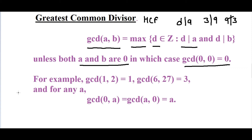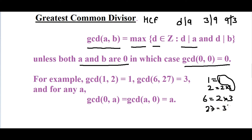Mathematics is based on axioms — if you change the axioms, mathematics changes entirely. For example, gcd(1, 2) = 1: 1 divides 1, and 1 divides 2, so 1 is the biggest common factor. For gcd(6, 27): 6 = 2 × 3, and 27 = 3³, so GCD is 3. Also, gcd(0, a) = gcd(a, 0) = a, because any number a divides 0 — you can write 0 = 0 × a, so a is the common factor.